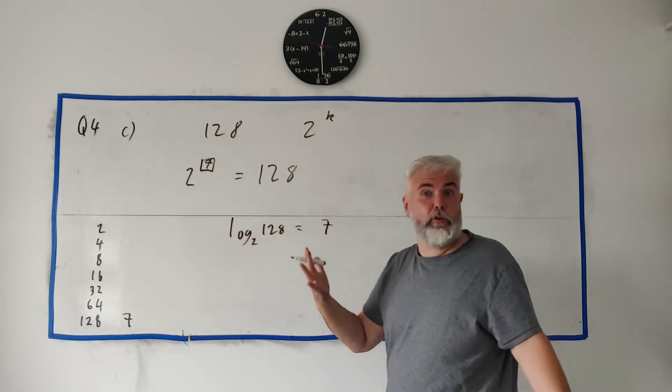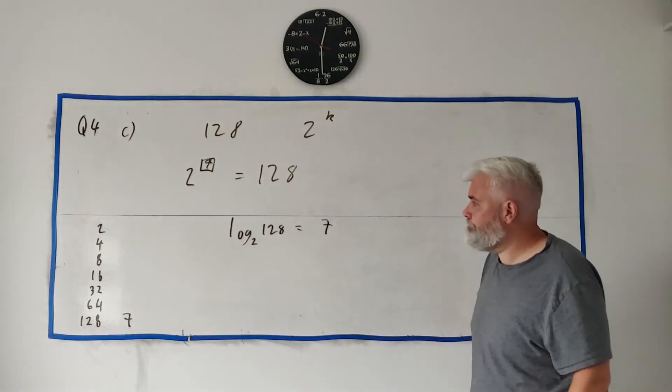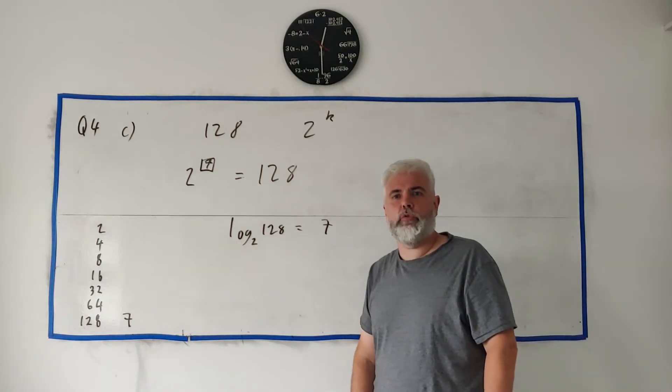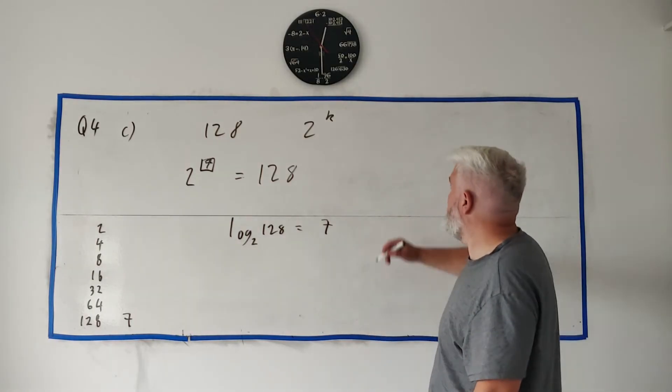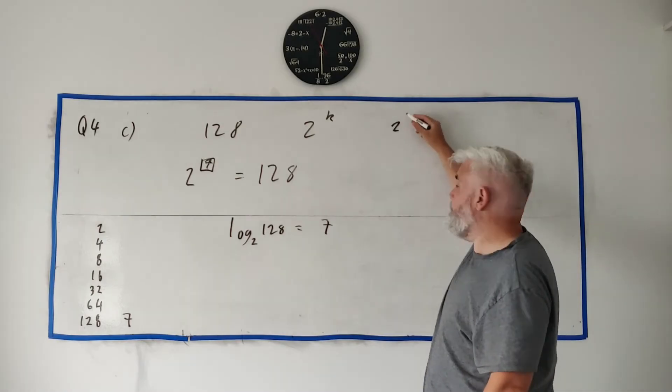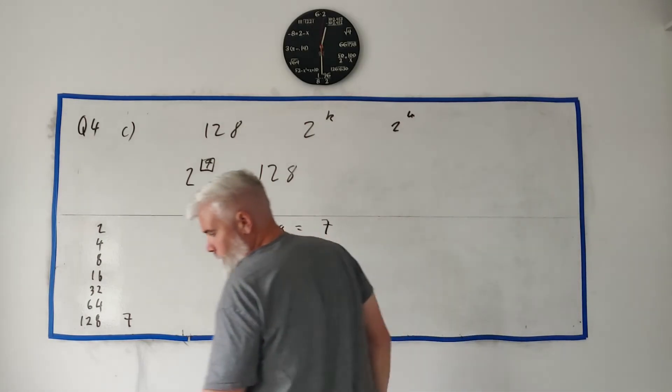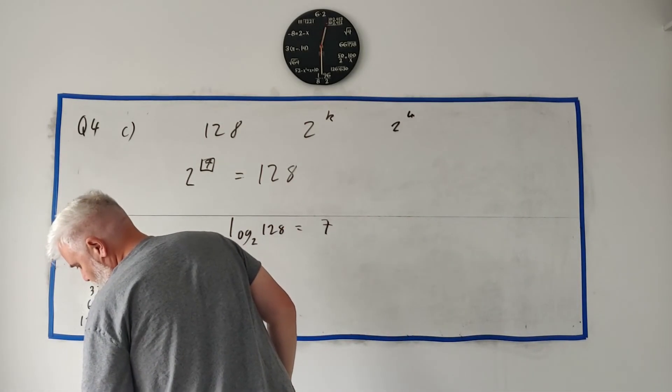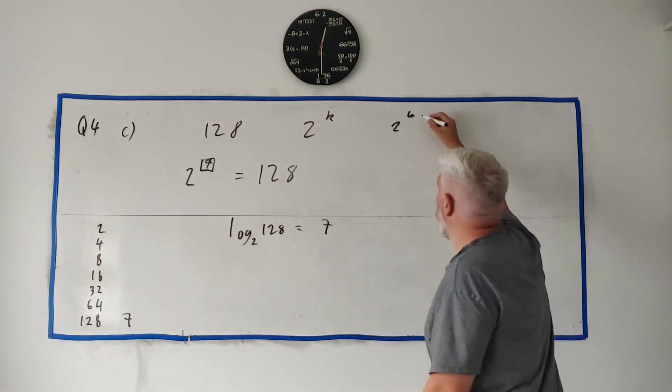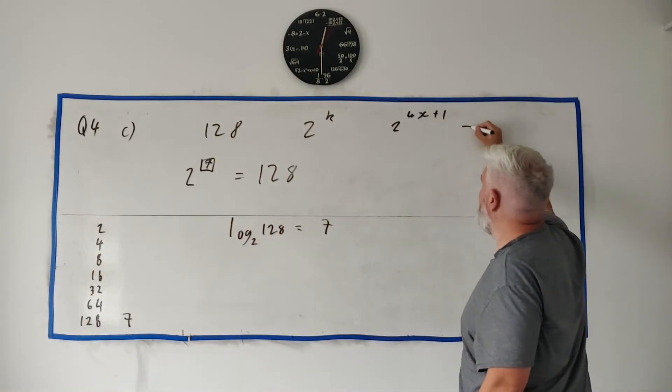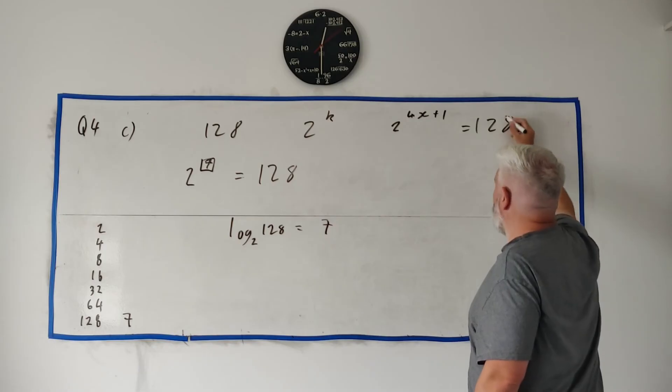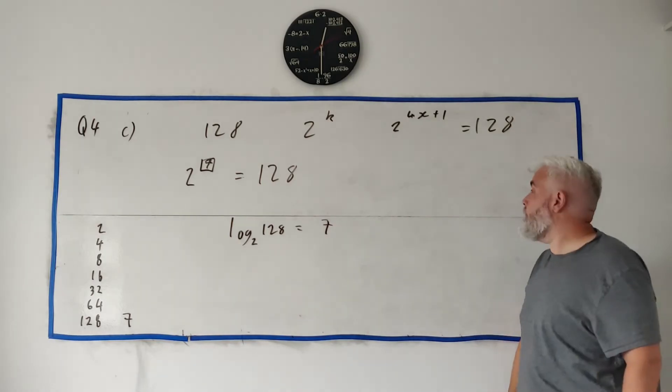For part two, it says hence or otherwise solve this: 2 to the power of 4x + 1 is equal to 128.